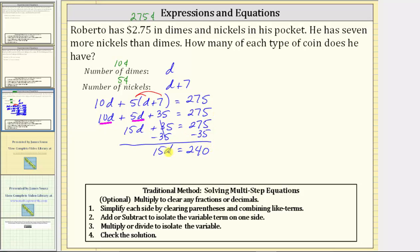The last step is to multiply or divide to isolate the variable and solve the equation. And because 15d means 15 times d, to undo the multiplication and solve for d, we divide both sides by 15.